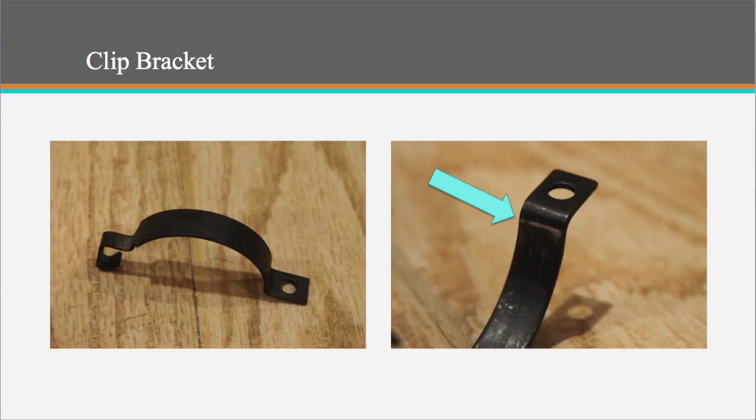The clip bracket could also have been made using die casting, but the process is generally more time consuming and is less precise than roll forming.